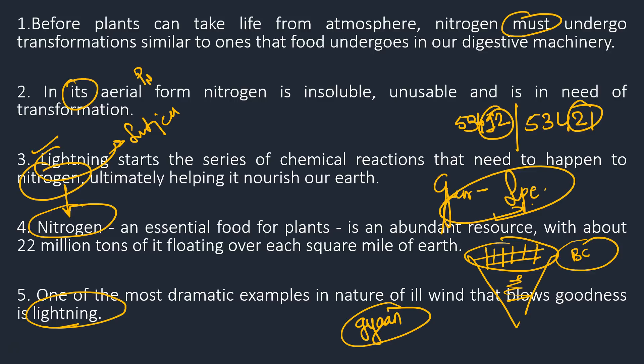Number 1 is an advice — it's kind of a conclusion, because it talks about 'must.' But look at number 2: 'In its aerial form, nitrogen is insoluble.' The word 'its' is referring back to nitrogen. So in number 4 we talk about nitrogen, and number 2 talks about nitrogen — that's why the author uses 'it's' instead of writing 'nitrogen' again. So after five, three, four — number 2 comes next, and number 1 goes to the end. The answer is five, three, four, two, one.